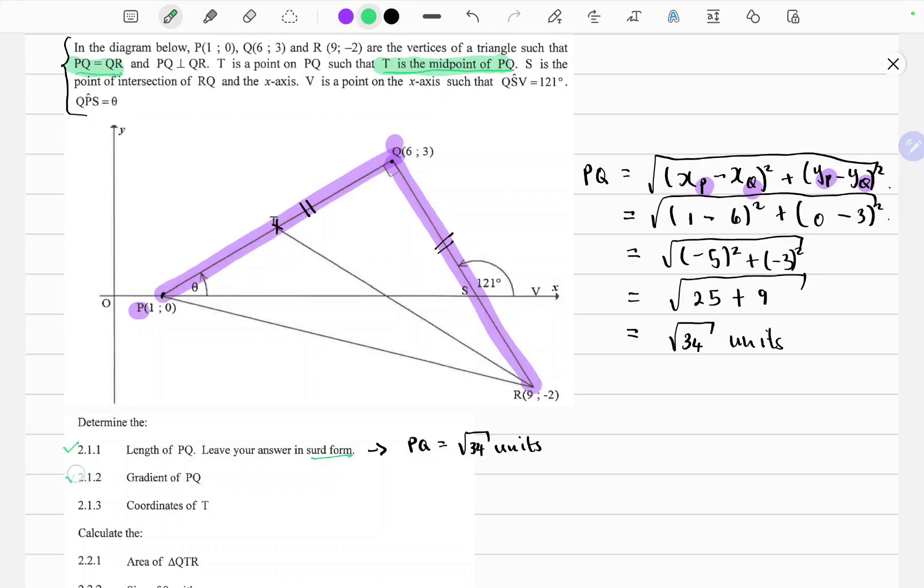The second question wants us to calculate the gradient of PQ. So we can use the gradient formula. So the gradient M of PQ, I'm using the PQ subscripts again, is YP minus YQ over XP minus XQ. So it's just a matter of substitution.